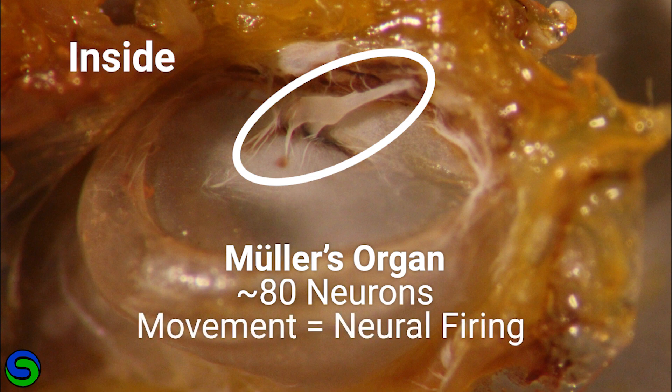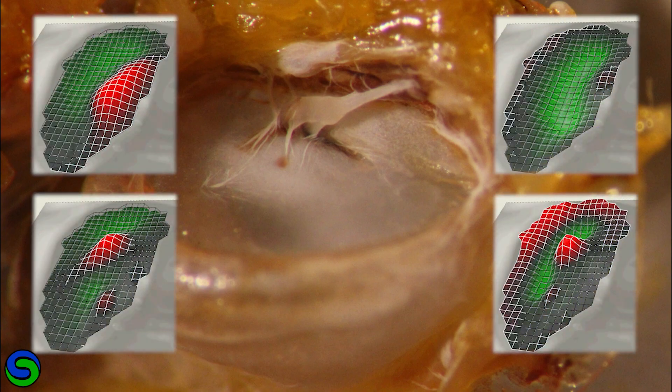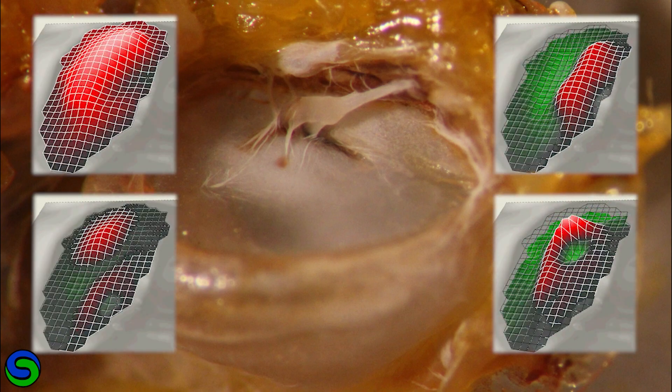When the tympanum moves, Mueller's organ moves and the neurons fire. Differential movement of the membrane will trigger different firing responses.